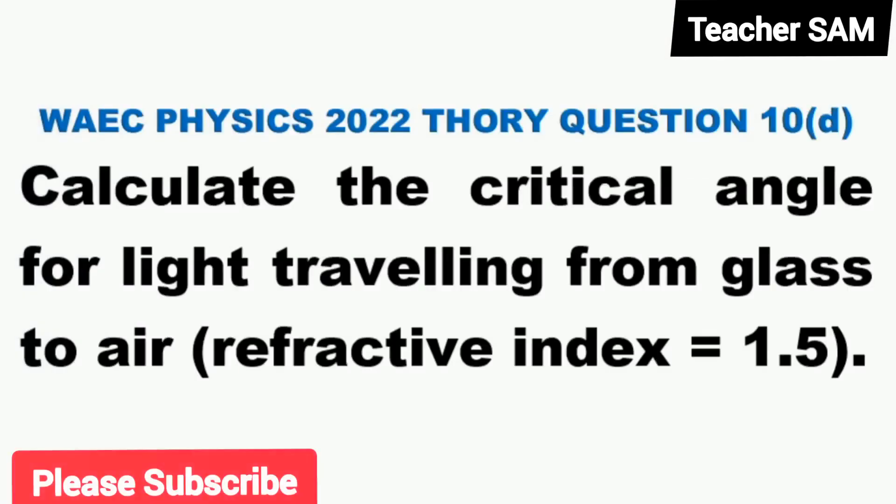Question 10d: Calculate the critical angle for light traveling from glass to air. We are given the refractive index equals 1.5. Our solution: